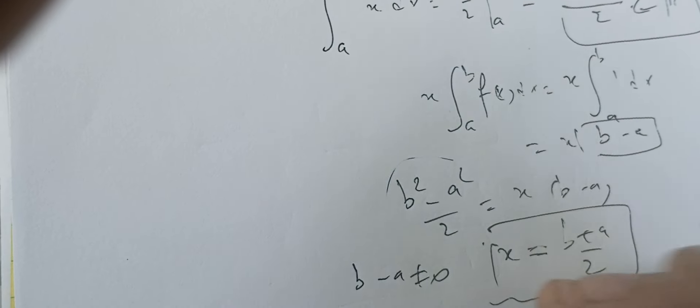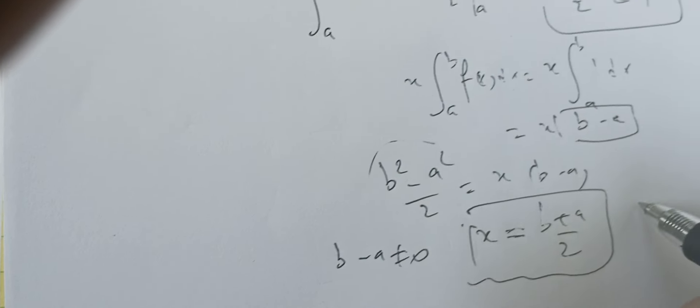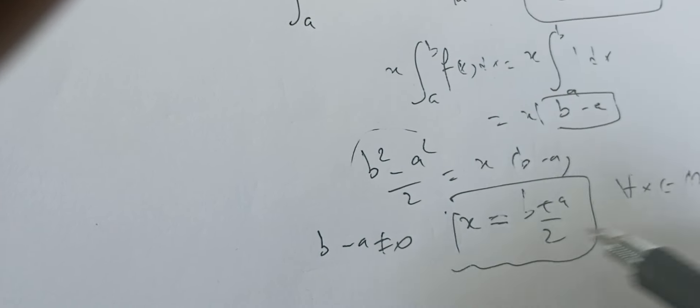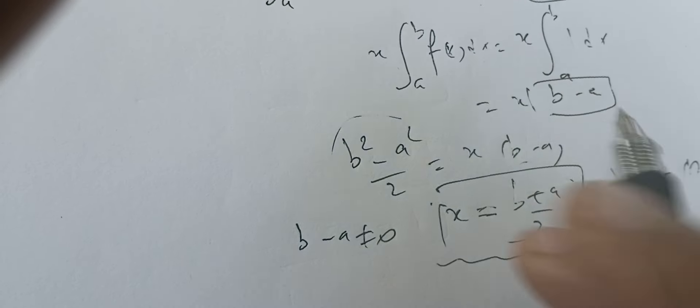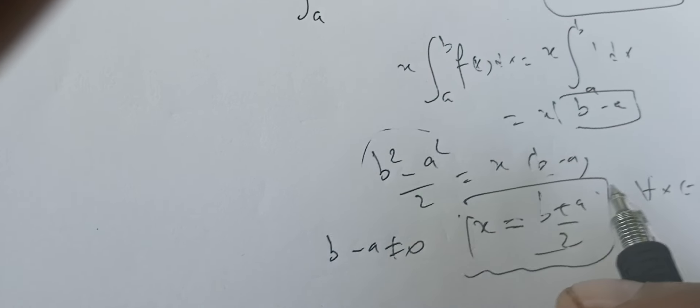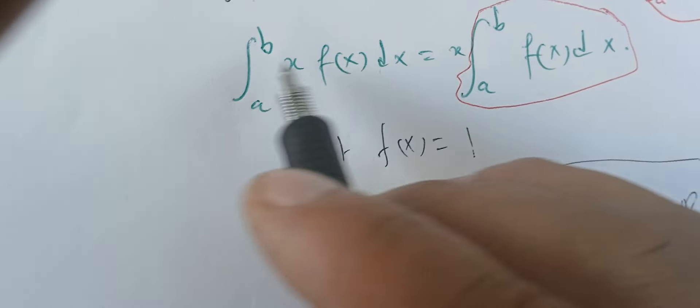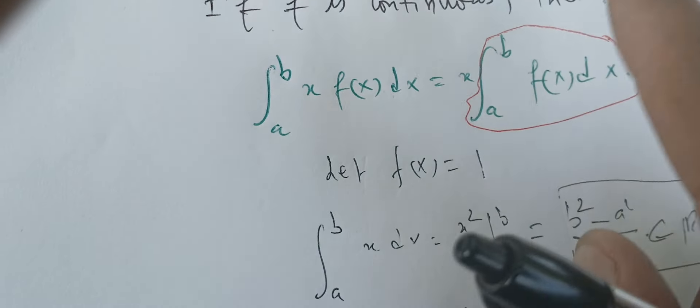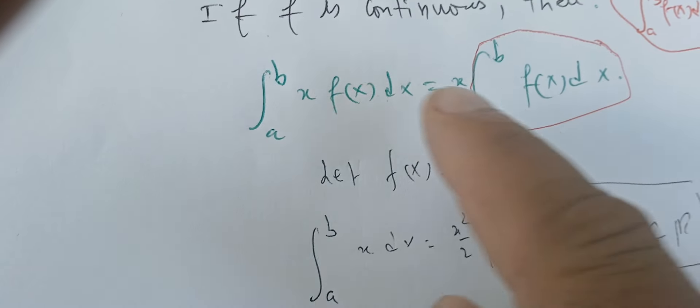But can we say that any number in R is (b plus a) over 2? It's wrong. The only case when this statement is true is for one case only, which is when f is zero.